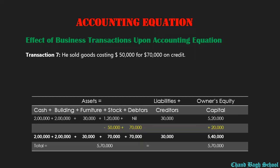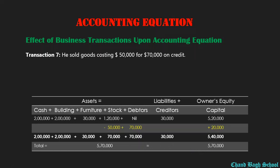جب بھی کسی business کو profit ہوتا ہے، وہ capital میں add کر دیا جاتا ہے۔ ہمارے پاس already $520,000 capital موجود ہے۔ اس میں $20,000 add ہونے کے بعد total capital $540,000 ہو جائے گی۔ اس طرح accounting equation پر دونوں sides پر $20,000 کا addition ہوتا ہے، اور total assets $540,000 ہو چکا ہے، same amount on the liability side as well.